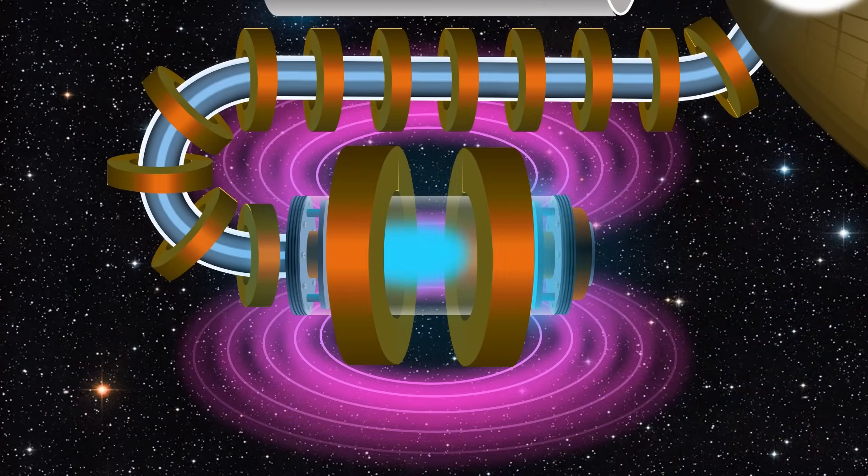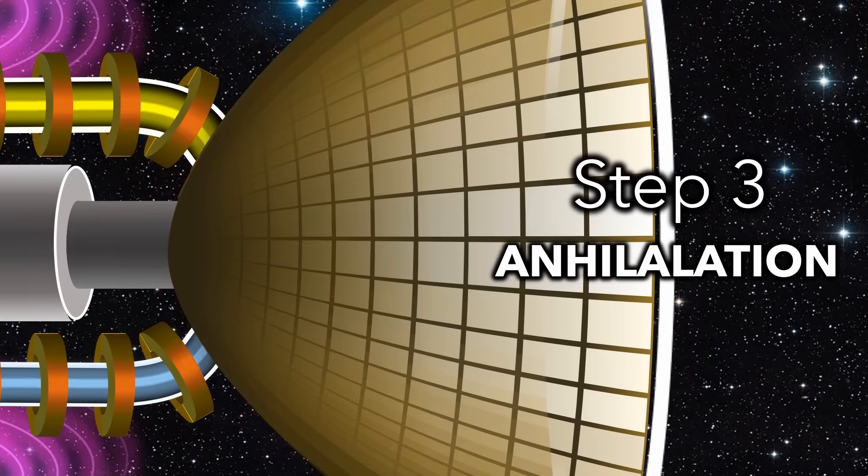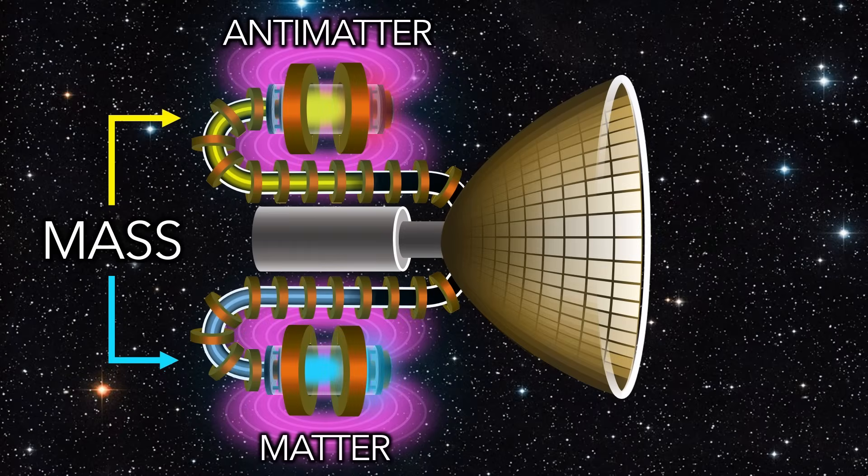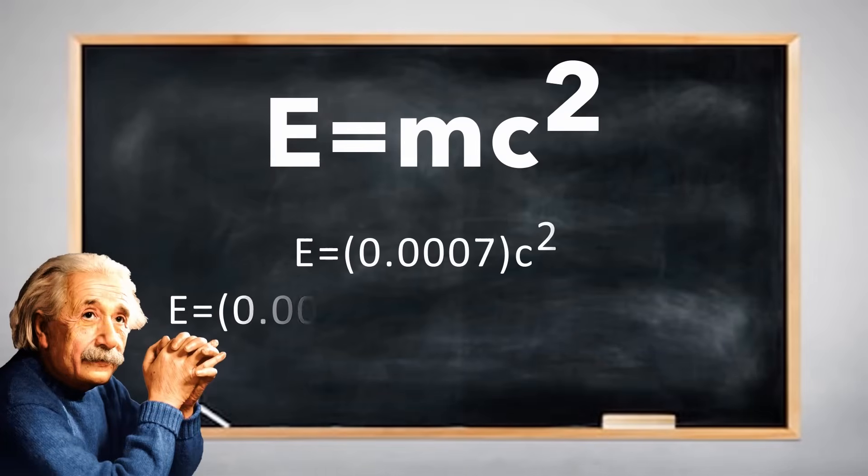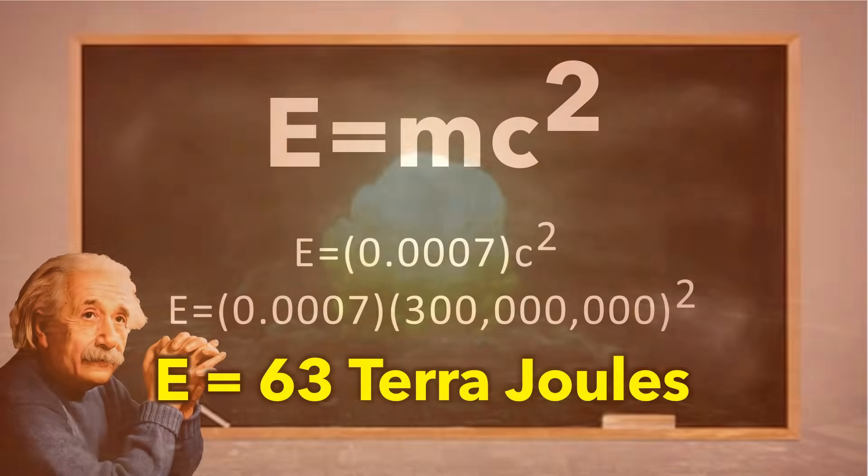So what happens when the matter and the antimatter meet? Step 3, annihilation. The mass in the matter and the antimatter is converted into pure energy. The mass in less than half a gram of antimatter releases the energy of the Hiroshima nuclear explosion, making antimatter the most energy-dense fuel in the universe.